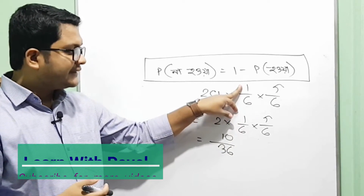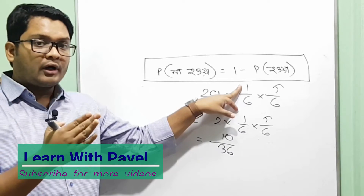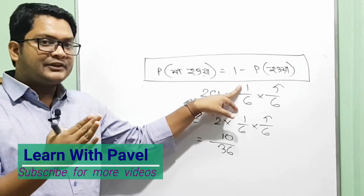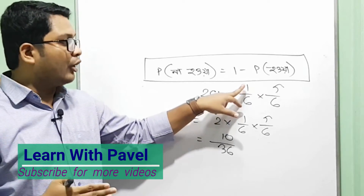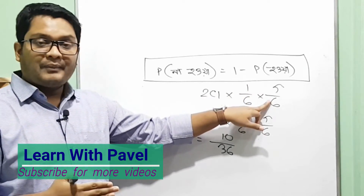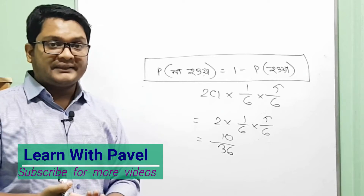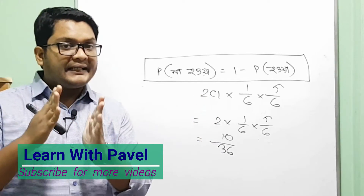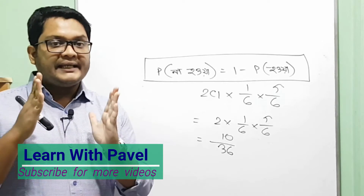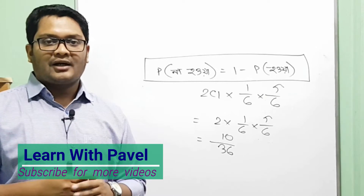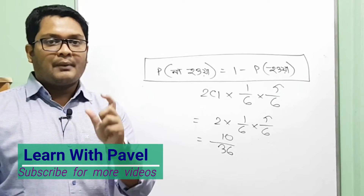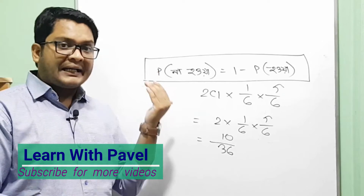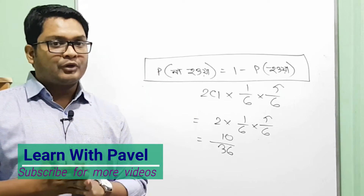We get 1 by 6. So we can write it as 2 by 6. I have two ways to do this problem.